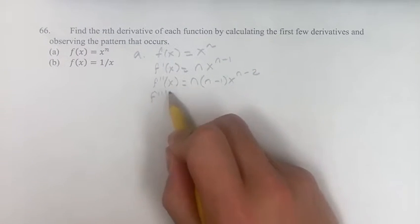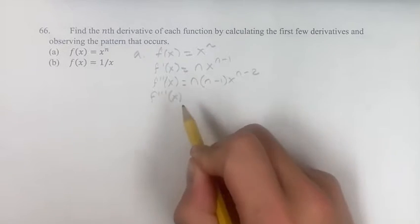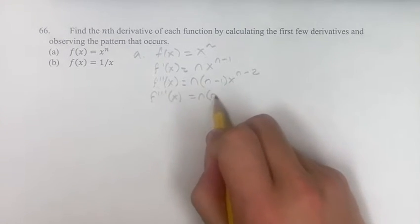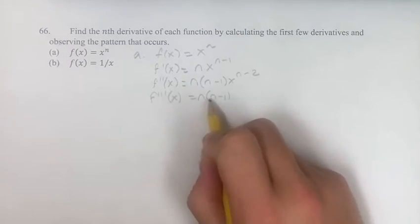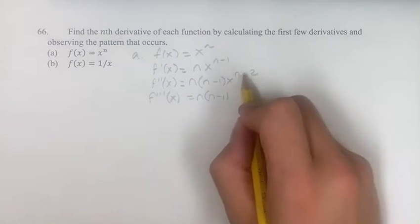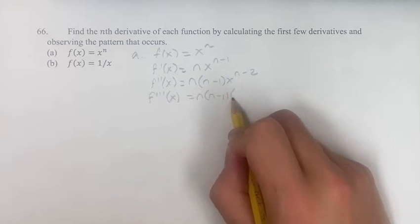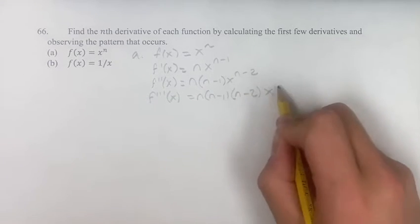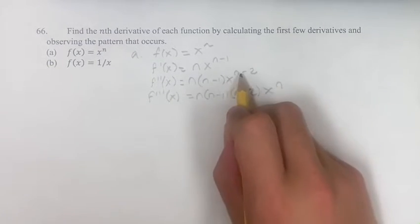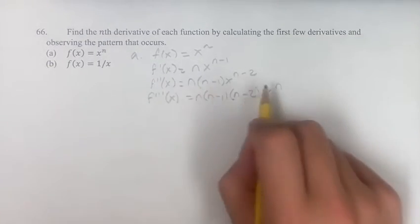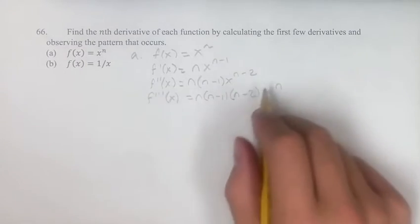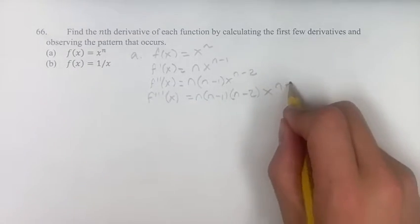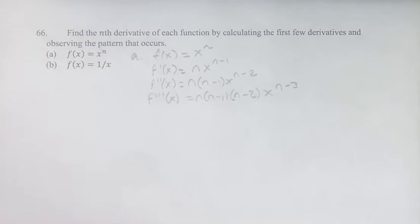Taking the next one, the third derivative of x: our coefficient is now n times (n minus 1). You bring down your exponent n minus 2, and this gives x to the n minus 2 minus 1. Again, you subtract one each time in the exponent, so this is x to the n minus 3.